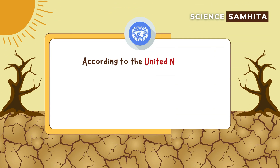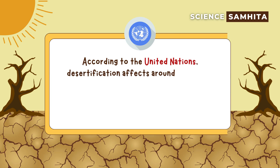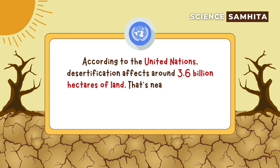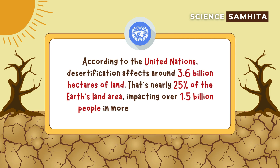According to the United Nations, desertification affects around 3.6 billion hectares of land — that's nearly 25% of the Earth's land area — impacting over 1.5 billion people in more than 100 countries.